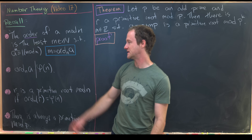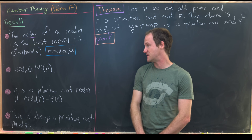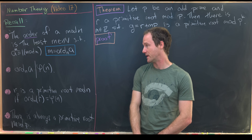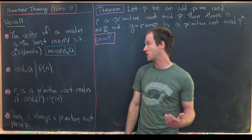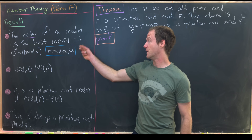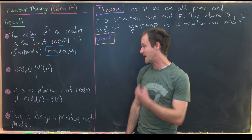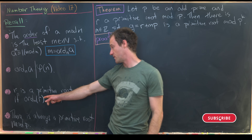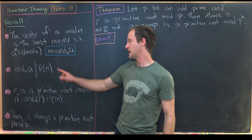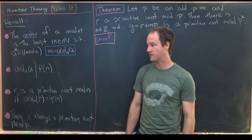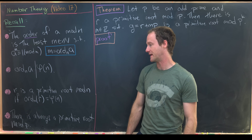A really simple divisibility result: the order of a mod n always divides phi of n, where that's the Euler-Totient function evaluated at n. You can prove this pretty easily just using a division algorithm argument and the minimality of the order. Then the definition of a primitive root: we say r is a primitive root mod n if the order mod n of r is phi of n. So the largest possible order is phi of n, and if we achieve that largest possible order, we're called a primitive root.